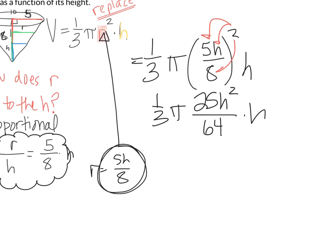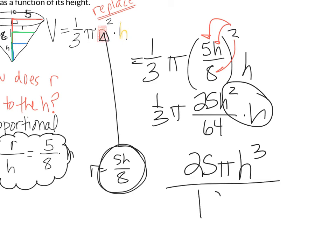Now 25h squared over 64 times h again. Finally, simplifying gives us 25 pi h to the third power, when I multiply these two things together, all divided by 3 times 64, which is 192. That is the volume in terms of just the height.